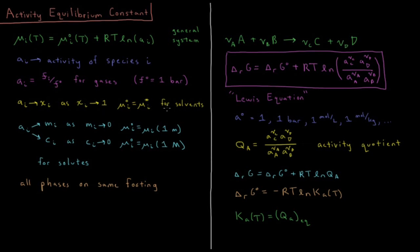For solvents — things which are liquids in solution that are a dominant portion of the mole fraction — the activity of a solvent approaches its mole fraction as the mole fraction approaches one. So the standard chemical potential for a solvent is equal to the chemical potential of the pure liquid of that solvent. The activity of solvents thus approaches their mole fraction.